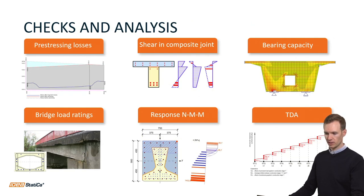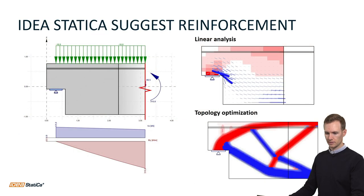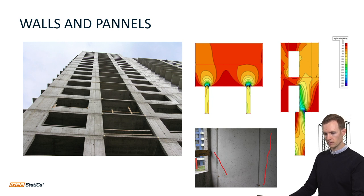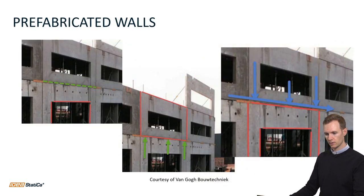You can never have too much data when it comes to documentation for these checks. Results after analysis are presented clearly, and you can also perform staged construction in beams. The software can suggest reinforcement using a topology optimization tool, showing compression and tension flow patterns in beams, walls, or whatever you are checking. Here is an example from a customer project involving walls and panels.